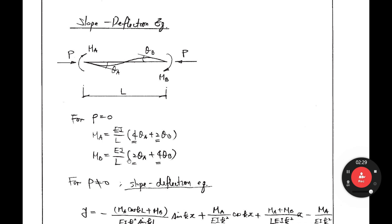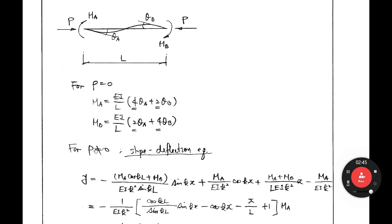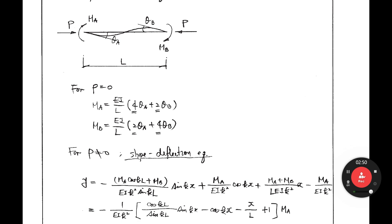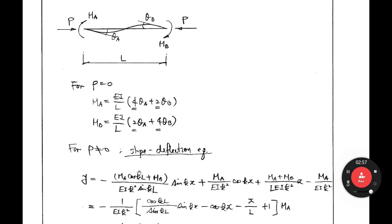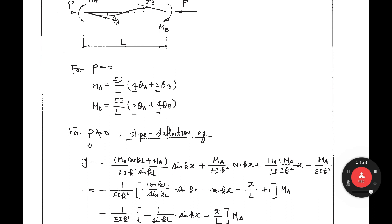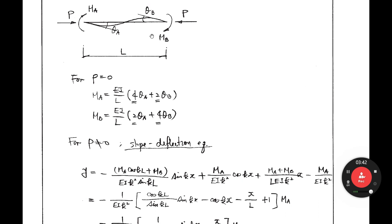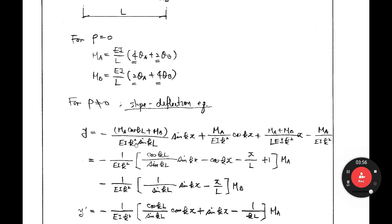If axial force exists, what happens to this slope deflection equation? The coefficients 4 and 2 should be changed. When P is not zero, we have the deflection equation: y equals minus MA cosine... — you have seen this equation in a previous lecture. If you have both end moments, that deflection can be written as we already derived. We get the deflection at this condition subjected to axial force and bending moments ζA and ζB.